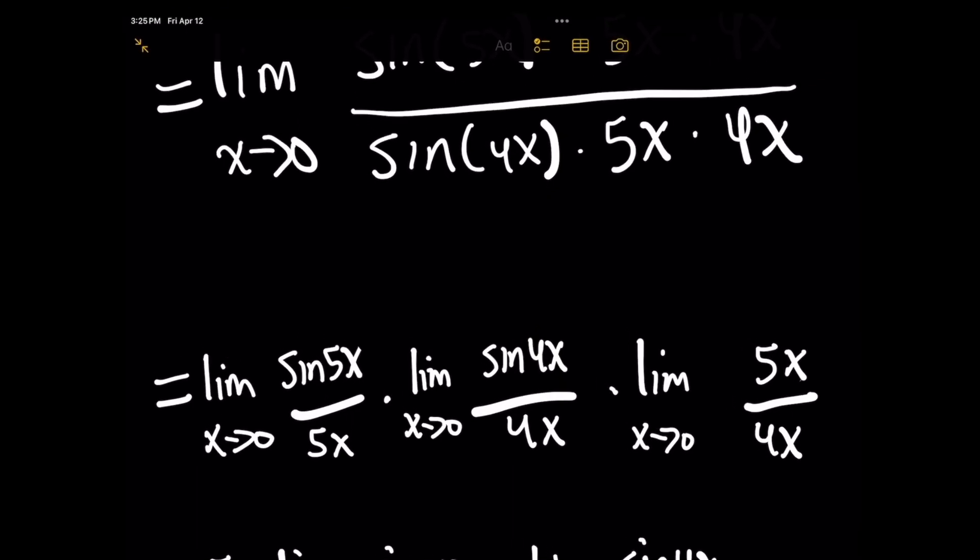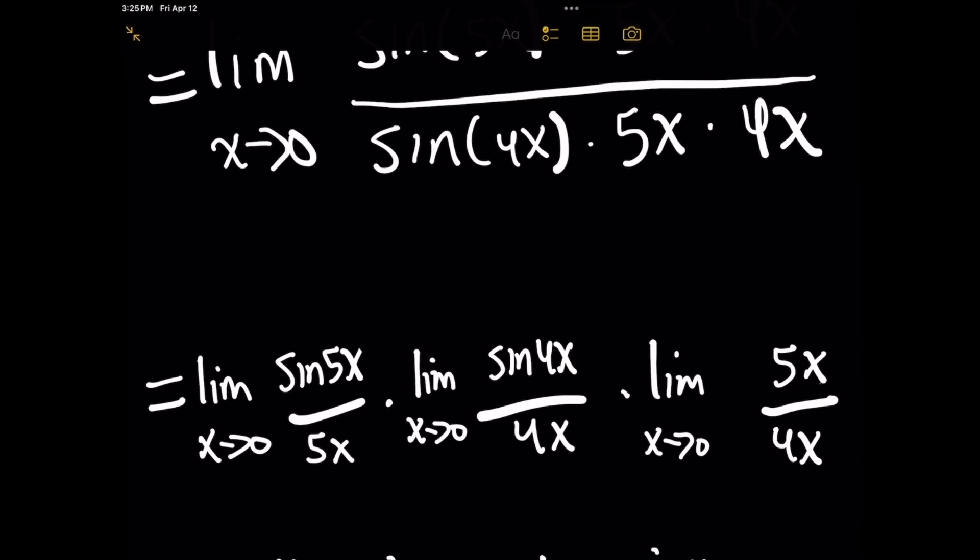And when I break this up, you now have a product of these fractions and the limits themselves become a product of limits also, right? So now we have a limit as x approaches 0 of sine of 5x over 5x times the limit as x approaches 0 of sine of 4x over 4x.